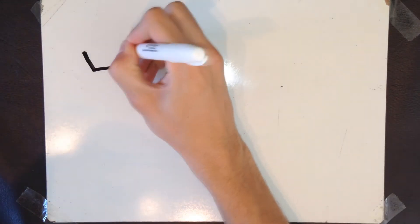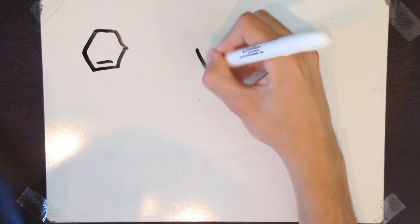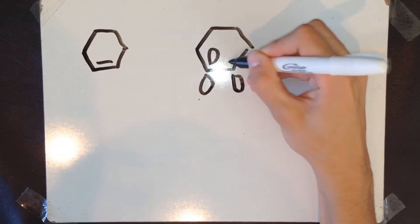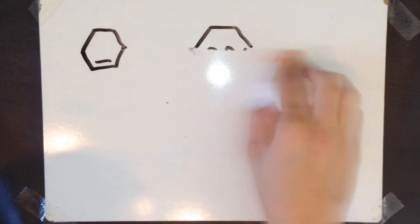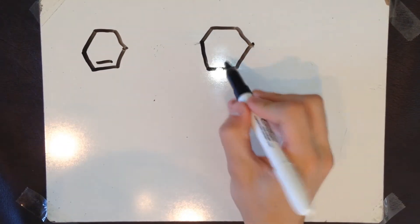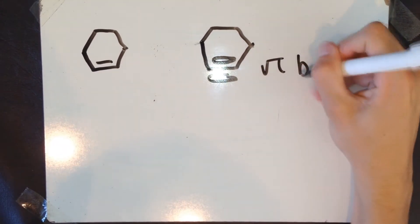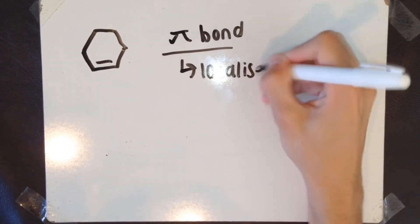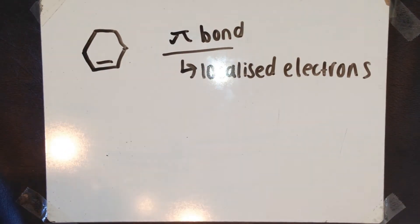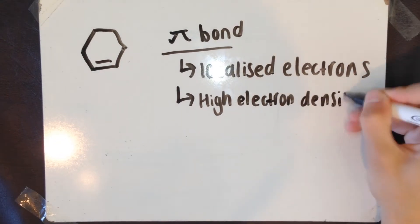As you know, a double bond contains a sigma bond and a pi bond. I'm going to quickly refresh a memory about how a pi bond comes about. The electrons left in the 2p orbitals around the carbon atom sideways overlap to form a pi bond. The electrons in this pi bond are localised electrons. This produces a region of high electron density.